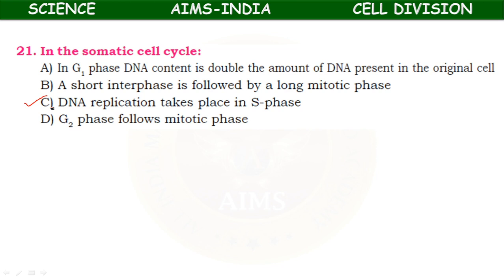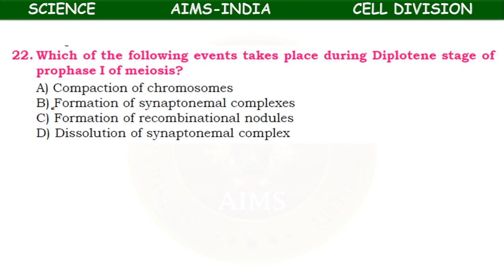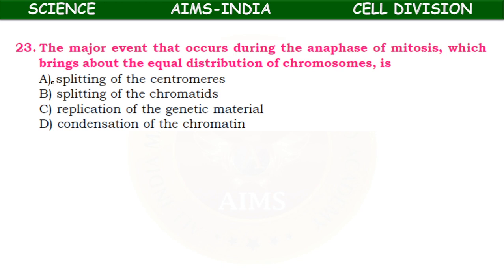Which of the following events takes place during diplotene stage of prophase 1 — compaction of chromosomes, formation of synaptonemal complexes, formation of recombinational nodules, or dissolution of synaptonemal complexes? Compaction of chromosomes takes place during the diplotene stage of prophase 1.